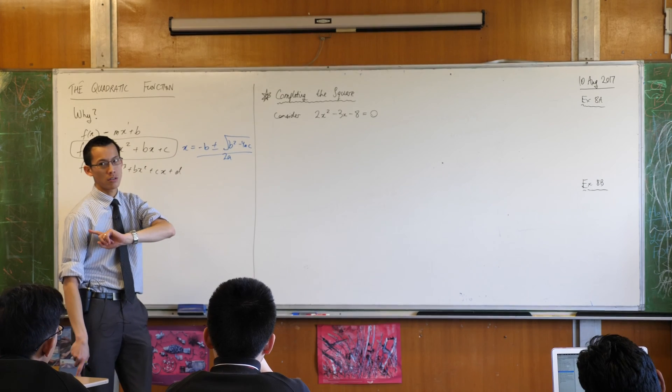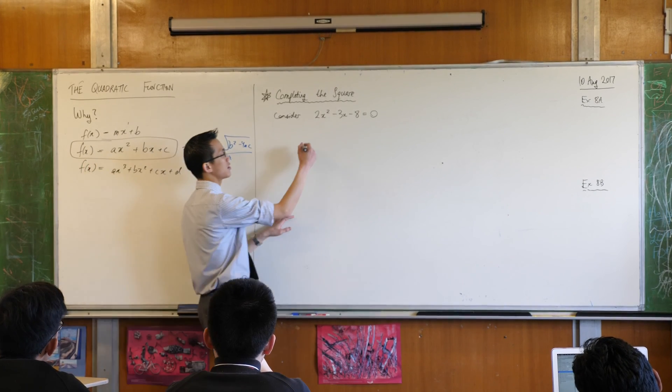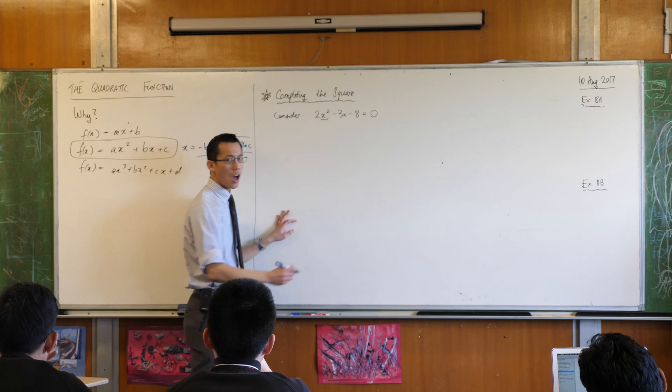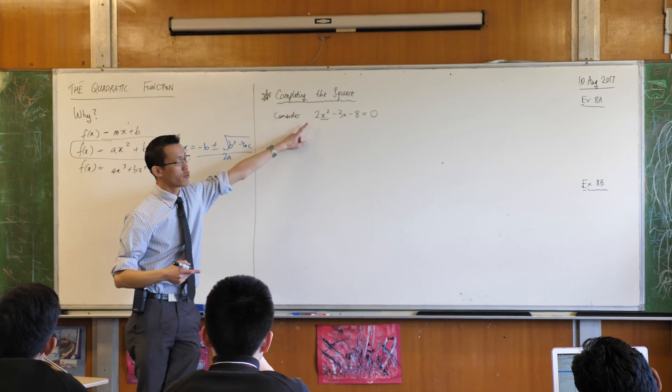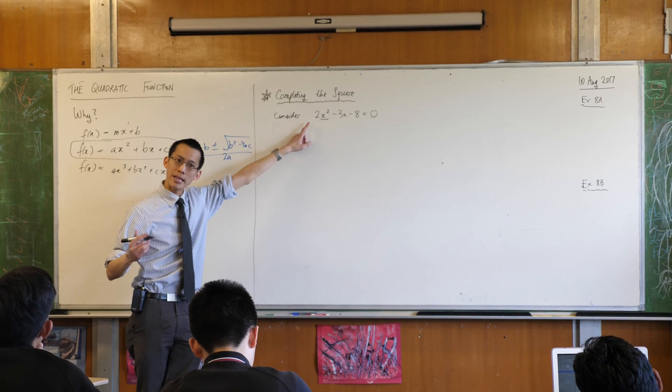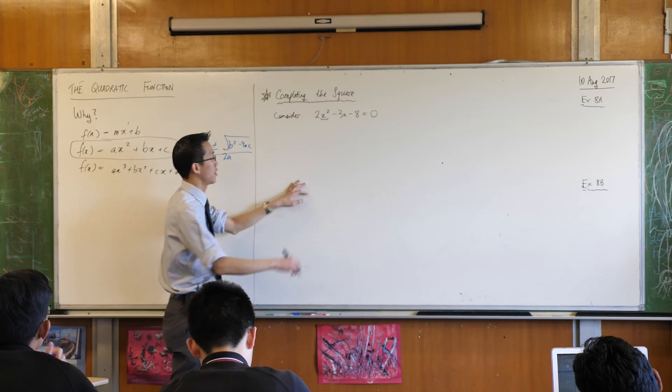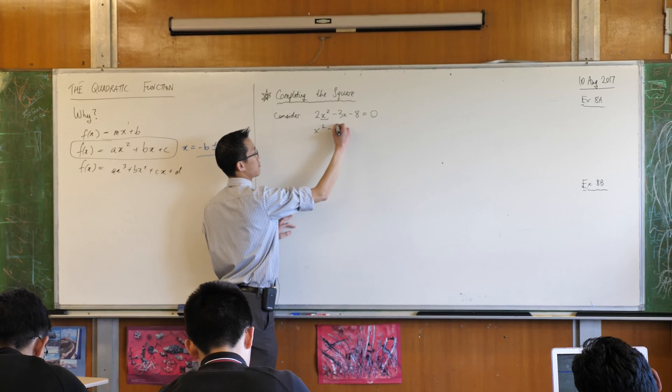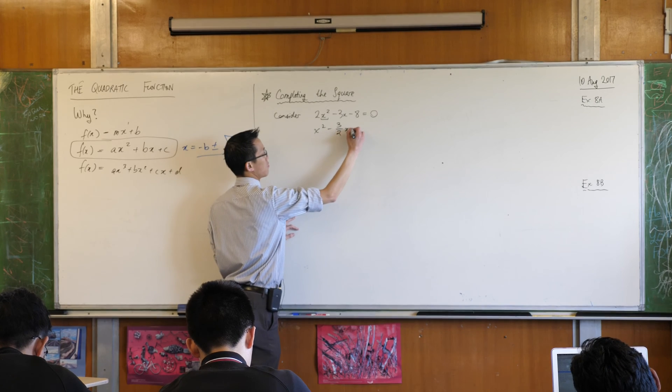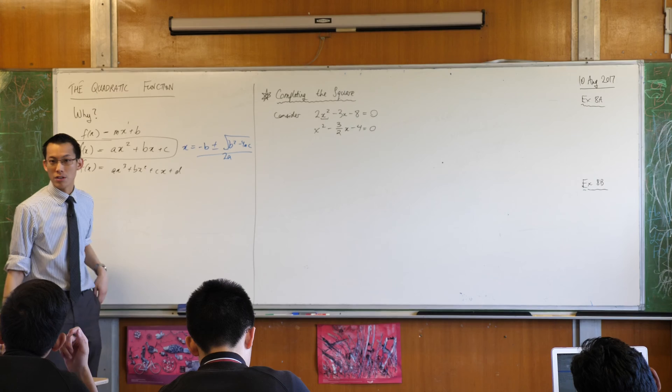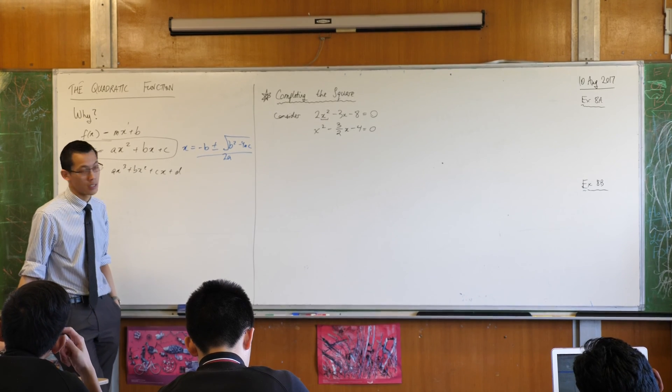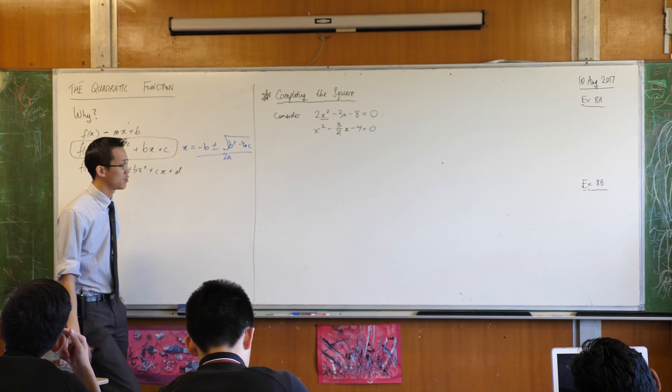So the very first thing we do with completing the square is we need to consider a monic version of this, a monic version of it. It's not monic right now because of the two so how will I get rid of that two? I'll divide everything through. So this equation here is equivalent to the first one because it's an equation so I've divided both sides by two, all good.